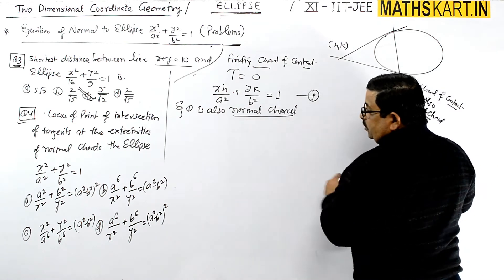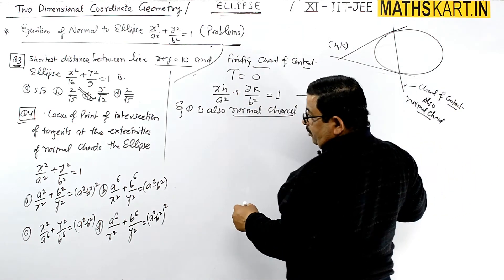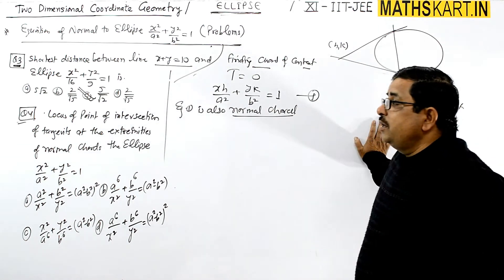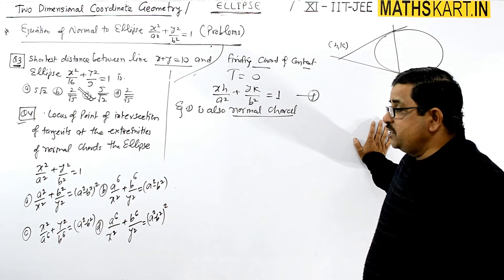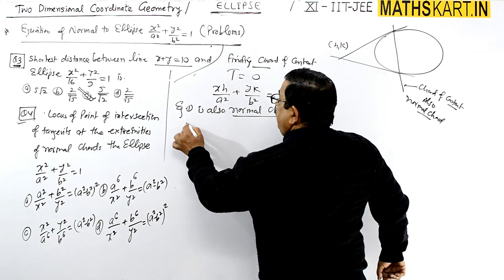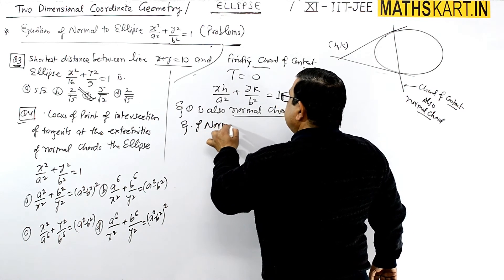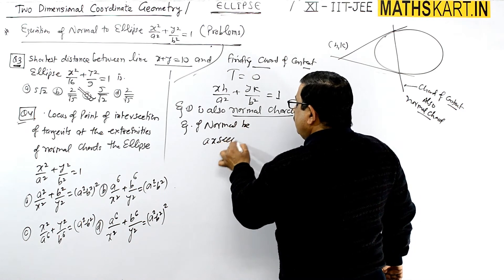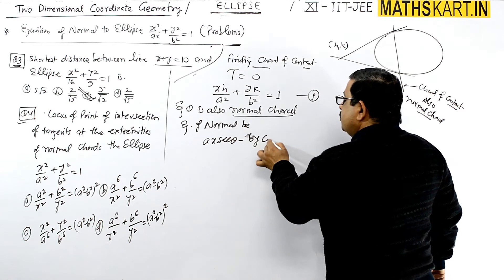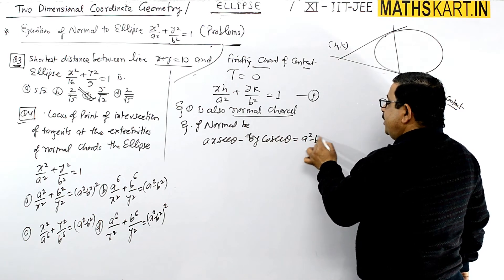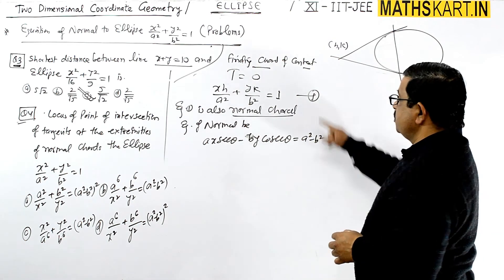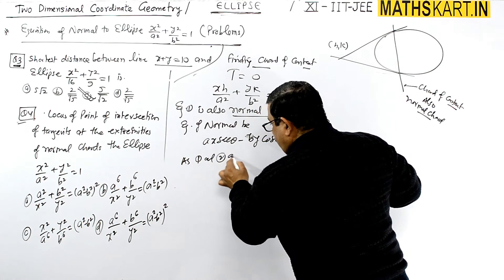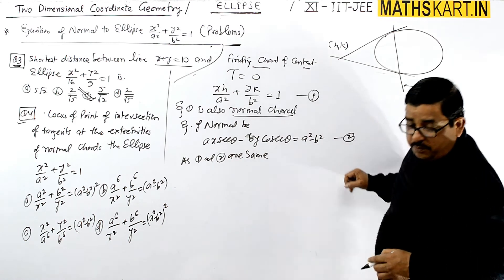Both equations (chord of contact and normal) represent the same chord, so we'll compare them. The ellipse is given in general form x²/a² + y²/b² = 1. Dividing the normal equation by (a² − b²) to make the right side 1, and comparing with equation 1, we equate the coefficients.